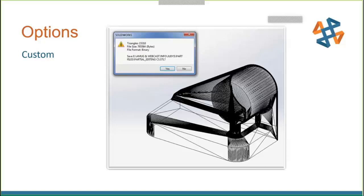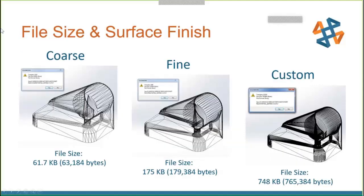When comparing the three settings, file sizes are not linear — they're exponential. Coarse gives the smallest file, fine is larger, and custom is much larger with far more triangles. The larger file is worth it for better printed output. The custom setting generally defaults to your chosen values in SolidWorks going forward.